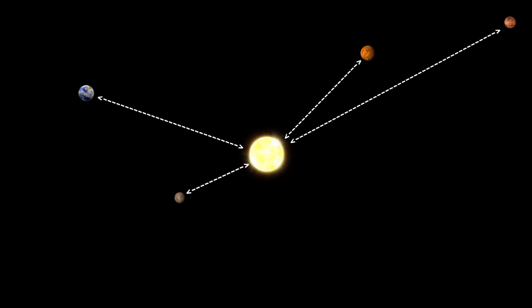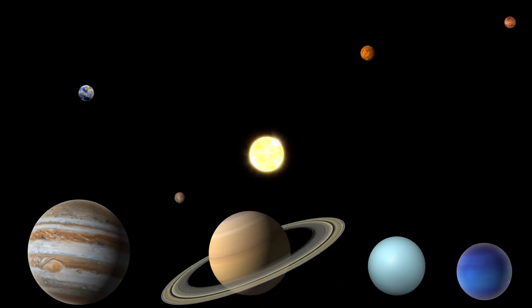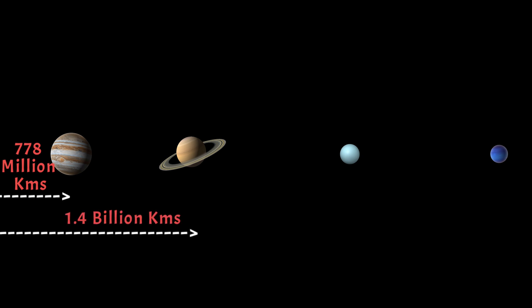If you thought these distances were so much, get ready to have your minds blown off by how far the Jovian planets are. Jupiter, Saturn, Uranus, and Neptune are 778 million kilometers, 1.4 billion kilometers, 2.9 billion kilometers, and 4.5 billion kilometers.